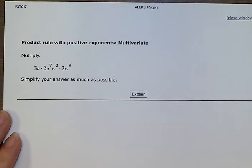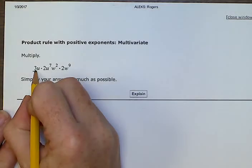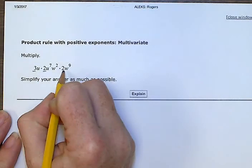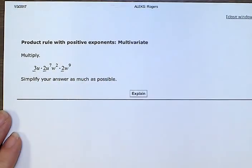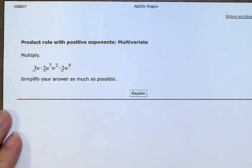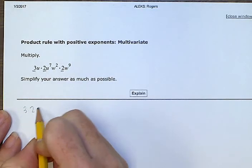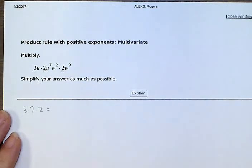So first we are going to multiply all the numbers together. 3 times 2 times 2. That gives us, 3 times 2 is 6, 6 times 2 is 12. That gives us 12.